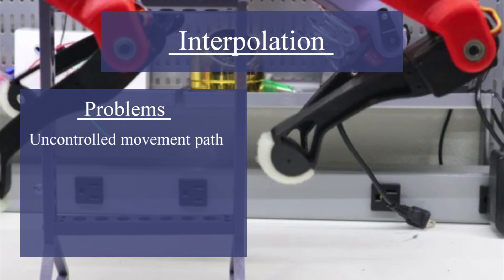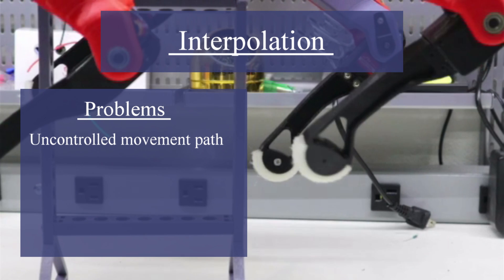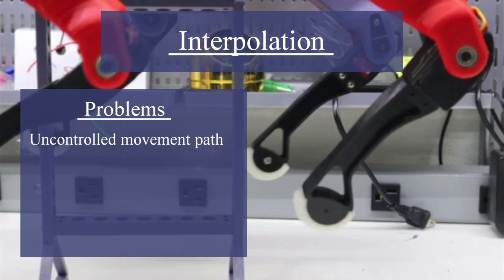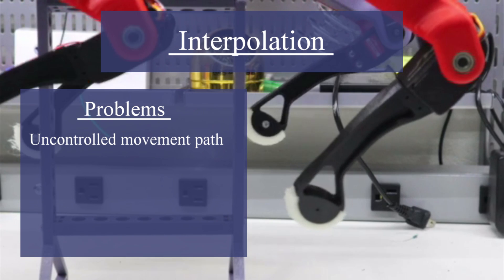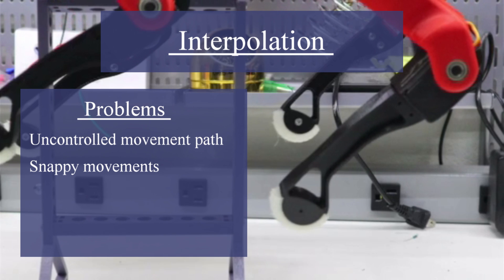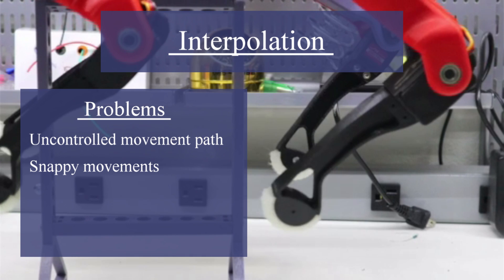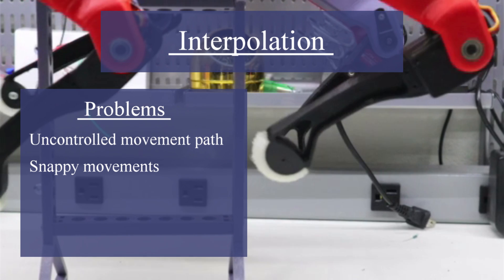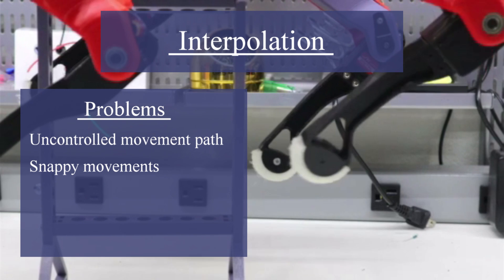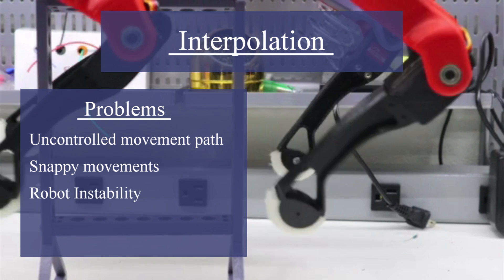Since the servos are going to move at their maximum speed, the foot may achieve its position faster than the animation intended. This results in a snappy or jerky movement. This behavior can generate excess momentum that is then translated into the main chassis, which can throw off your robot's balance, causing it to become unstable.